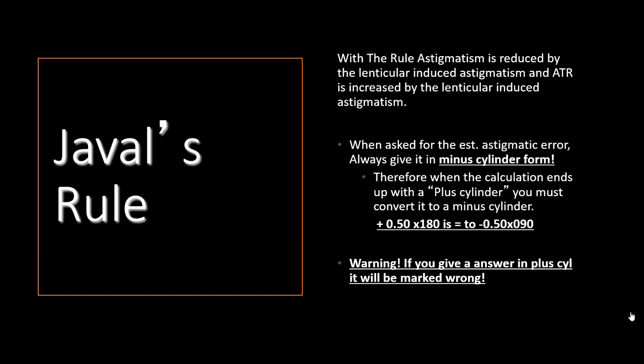With the rule astigmatism is then reduced by the lenticular-induced astigmatism, and against the rule is increased by the lenticular-induced astigmatism. This is true of everything: the lens provides against the rule astigmatism, the cornea typically provides with the rule astigmatism, and the difference between those two is the amount of astigmatism in our glasses prescriptions.